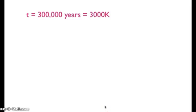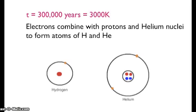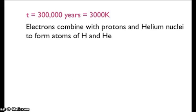300,000 years after the Big Bang, the temperature had cooled to 3,000 Kelvin. At this stage, electrons could combine with protons and helium nuclei to form the atoms of hydrogen and helium.